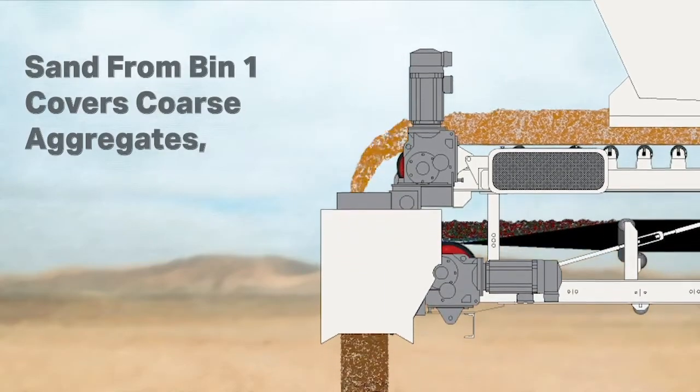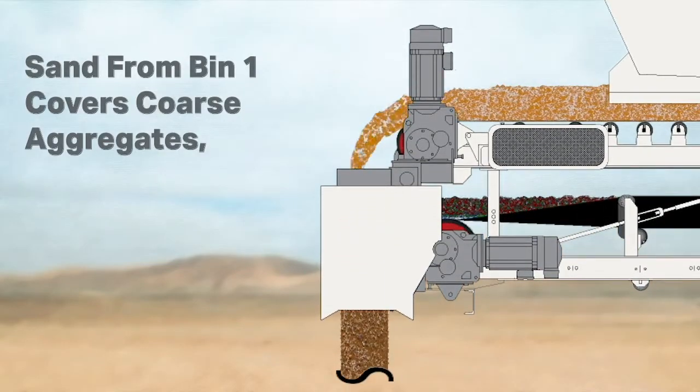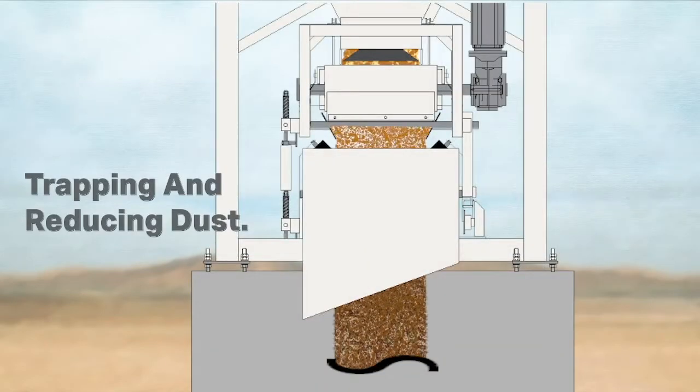Bin one holds sand, which covers our coarse aggregates, reducing and minimizing dusting in the loading process.